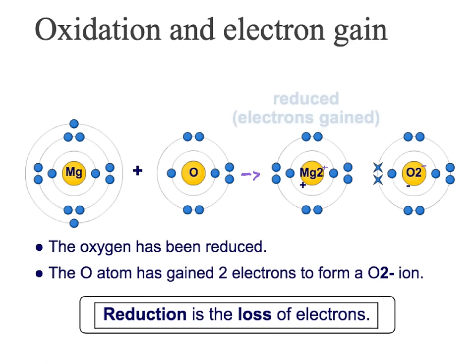Opposite to this, we have what has happened to the oxygen. As the magnesium has been oxidised, this must mean that the oxygen has been reduced. The oxygen atom has gained these two electrons in order to form the O²⁻ ion. So reduction is the gain of electrons.